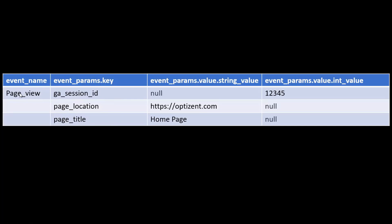You'll see something like this: event name, the parameter key, and the parameter value. There are string values, integer values, float values, and double values. For session ID, it's only an integer, so you'll see a null in the string column and a value in the integer column. Page location is a string value, so the integer column is null. Page title is also a string, so the integer is null.